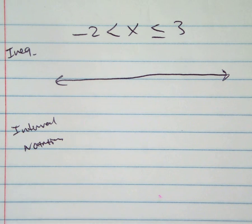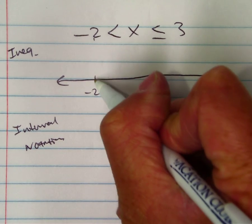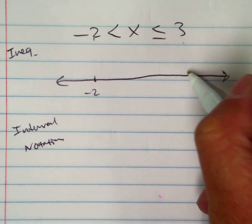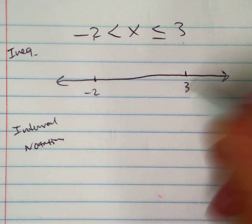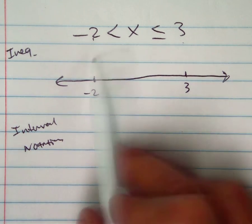All right, so we're going to go ahead and graph this. Class, what number do you have here? Negative 2. And what number do you have here? You have positive 3. Okay, so essentially this is a compound inequality.